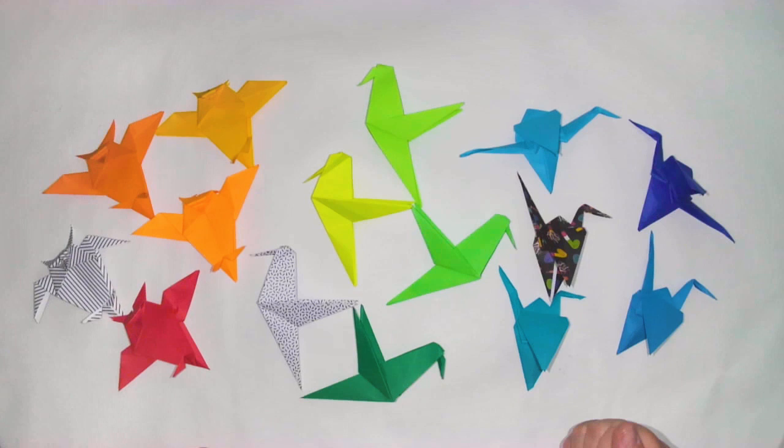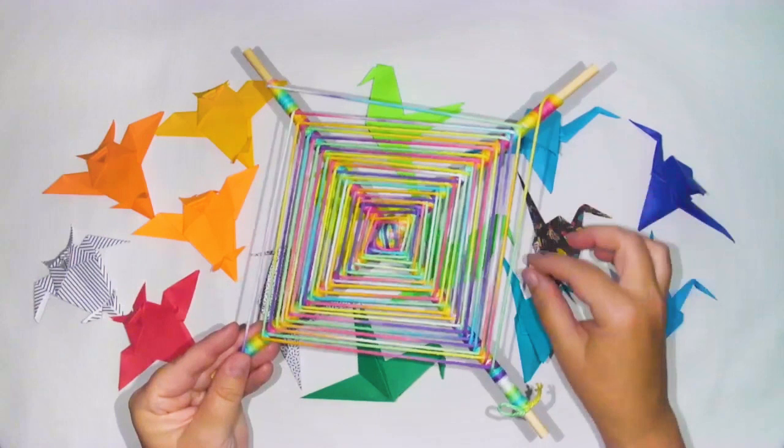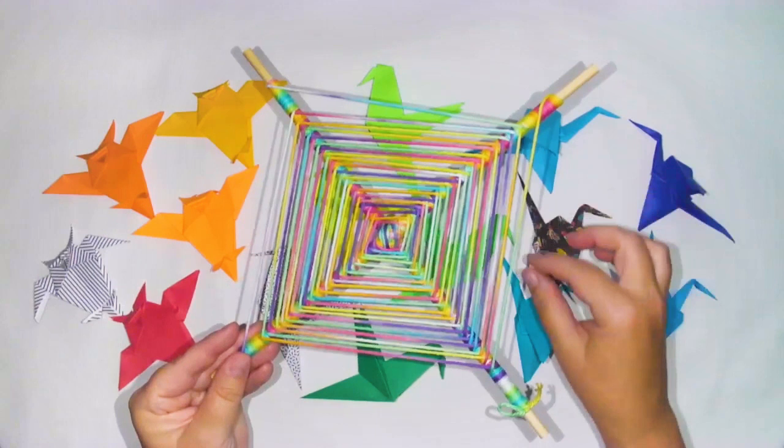There are many ways you can make or find something to use as the framework. For our mobile, we are going to use two wooden dowels and yarn. I'm going to show you how to assemble them together to create this particular framework in which our origami birds will hang from.